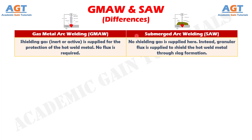Difference number 1: In gas metal arc welding, either inert or active shielding gas is supplied for the protection of the hot weld metal — no flux is required. Whereas in submerged arc welding, no shielding gas is supplied. Instead, granular flux is supplied to shield the hot weld metal through slag formation.